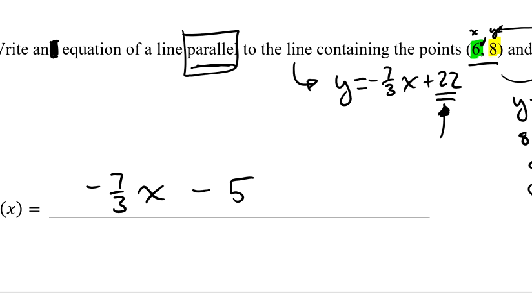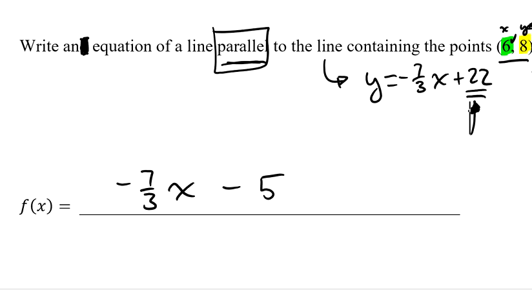y equals, f(x) equals negative 7 thirds x minus 5. Again, this can be any number that you want except for 22.